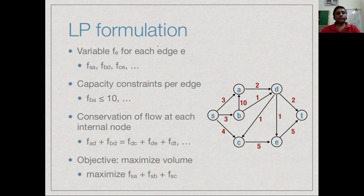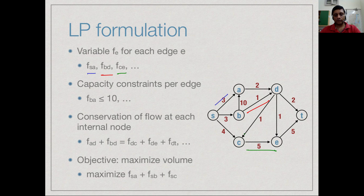We can set up a linear program by associating one variable per edge — for instance F_SA for edge S to A, F_BD for edge B to D, F_CE for edge C to E, and so on. Counting all edges in this graph gives 11 edges and therefore 11 variables in this linear program.